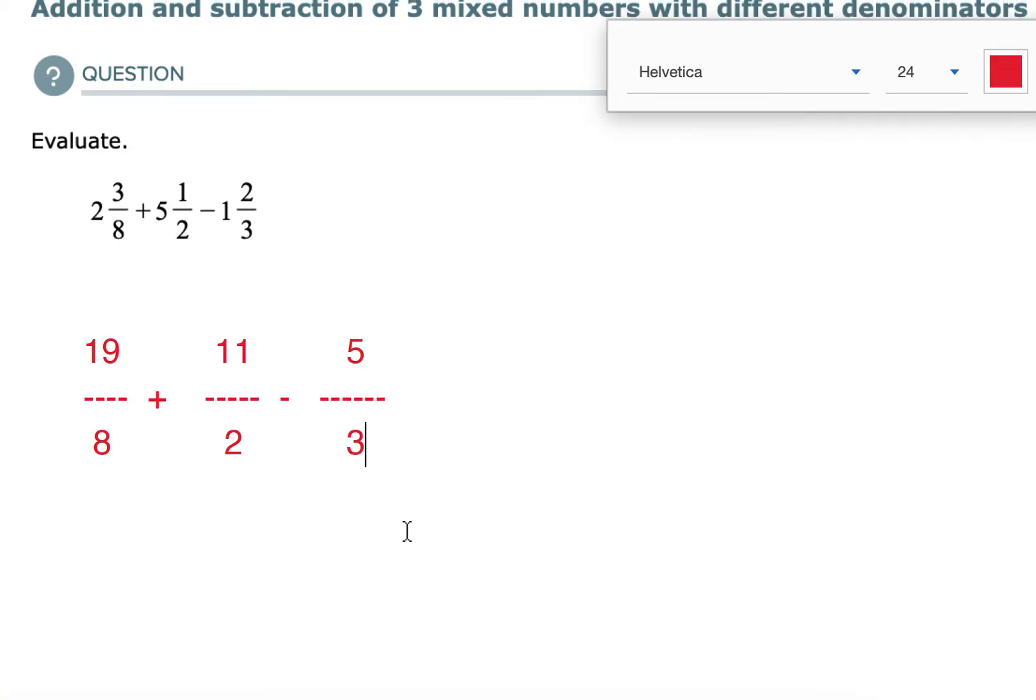We've got them in their improper fraction form, but we can't add or subtract fractions unless they have common denominators. So if you're not sure what the common denominators between the numbers 8, 2, and 3, you can list out their multiples. I'm just adding down the columns. I'm adding these numbers to themselves again and again and again.